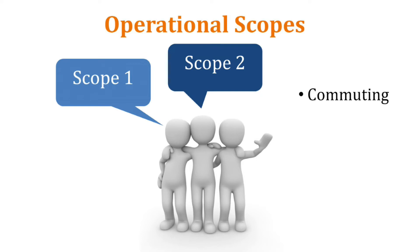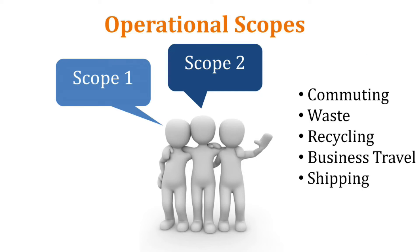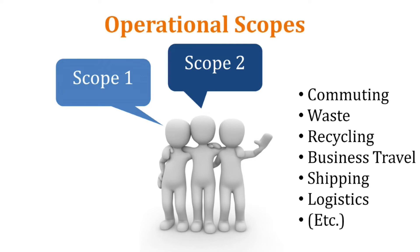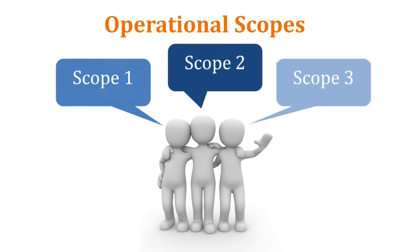Scope three includes your commuting, your waste, your recycling, your business travel, shipping, logistics, and anything involving your partners and contractors — anything else that falls into scope three.